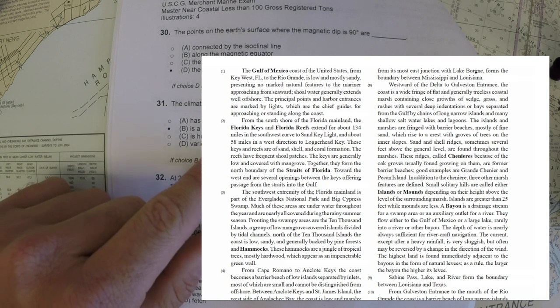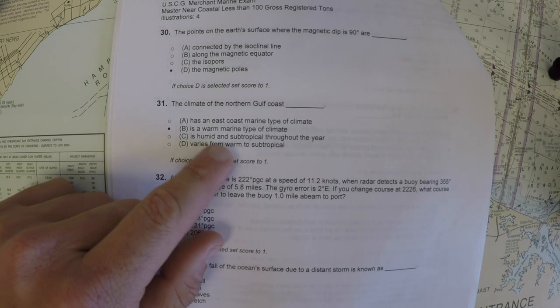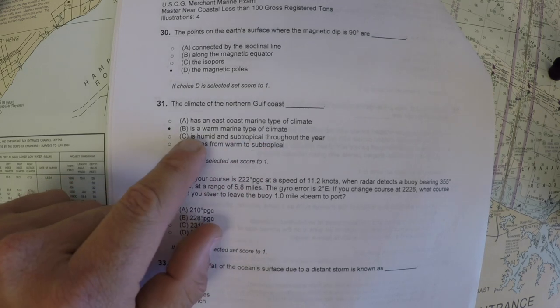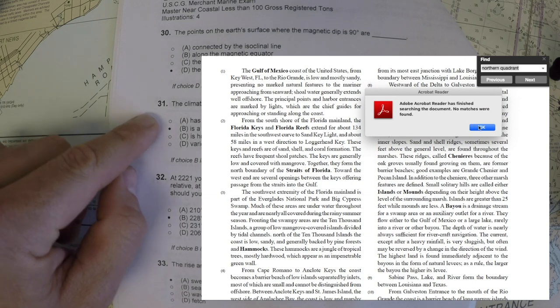But northern Gulf Coast, generally speaking, does it vary from warm to subtropical? Not exactly. Is it humid and subtropical throughout the year? No, it's a warm and marine type of climate. So you're going to look in the Coast Pilot for these type of questions.